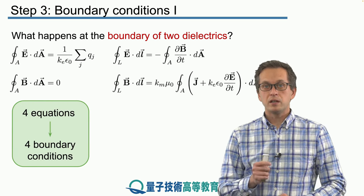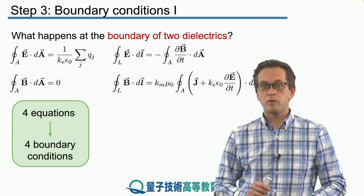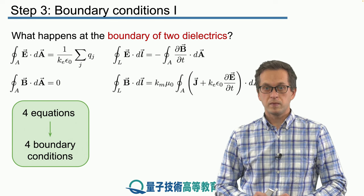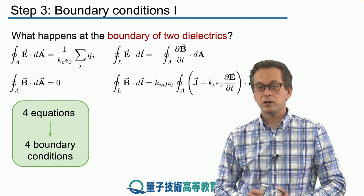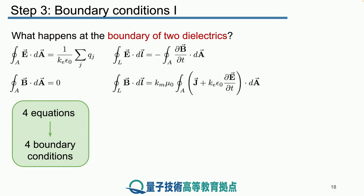There are four equations, therefore we will obtain four boundary conditions. They will be the vertical and horizontal components for the electric field and the magnetic field in dielectric one and in dielectric two.